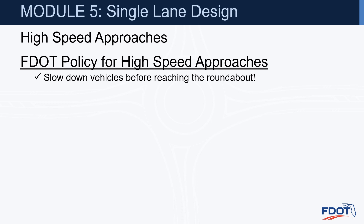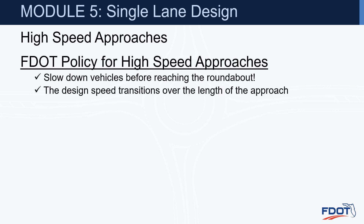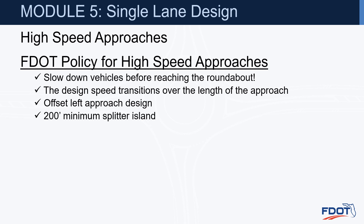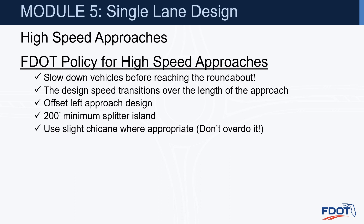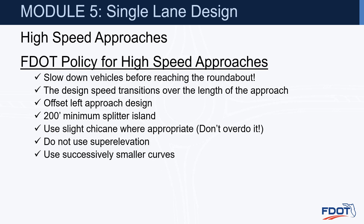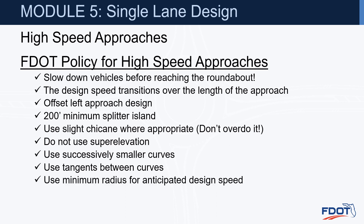The Florida DOT policy for high-speed approaches follows everything covered so far: vehicles should slow down before reaching the roundabout, the design speed transitions over the length of the approach, the offset left approach design is encouraged, a 200-foot minimum splitter island is required for high-speed approaches, use a slight chicane where appropriate and don't overdo it, do not use superelevation, use successively smaller curves with tangents between them, use minimum radii for the anticipated design speed, and curve lengths do not need to meet the 400-foot standard in other sections of the FDM.